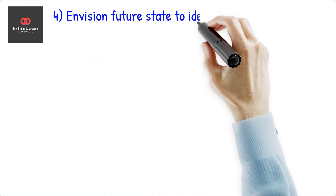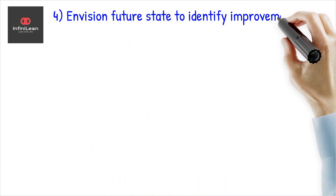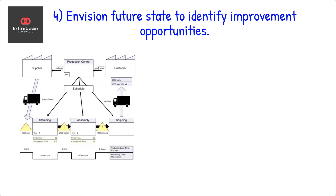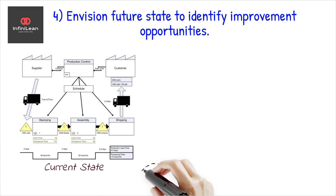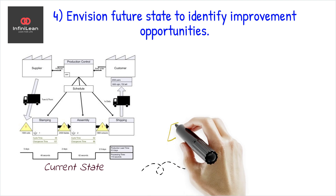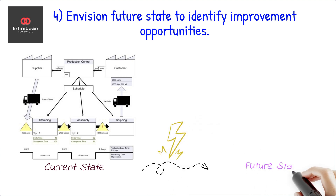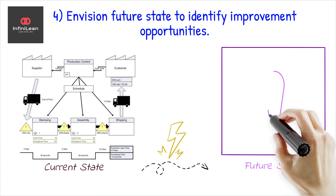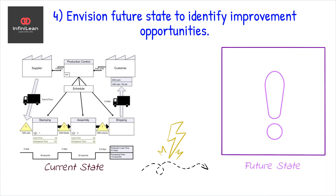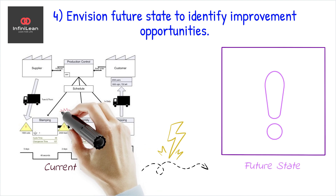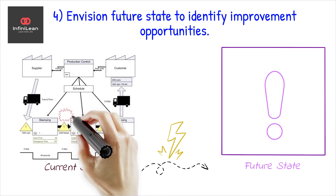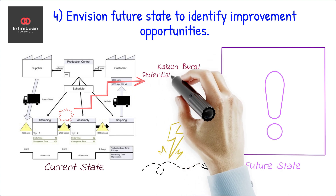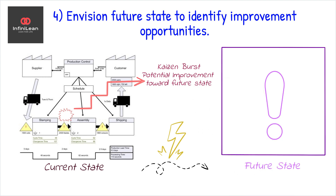After the current state is captured, the next step is to envision an ideal future state. This map represents how the process would look in an optimal scenario with all inefficiencies eliminated. By comparing the current state to the future, gaps and improvement opportunities become evident. The ultimate goal of this exercise is to implement actionable changes that move the process closer to the desired future state.